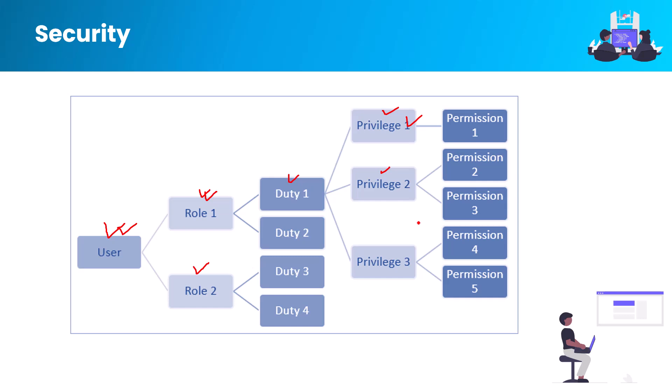Roles contain duties, privileges, and permissions that control access to system components such as forms, reports, or data entry. The administrator grants access to users for the duties they perform. After security roles, duties, and privileges have been set up, business managers can control user access as their business needs change.